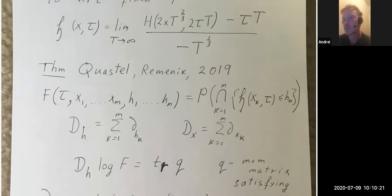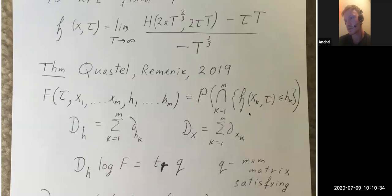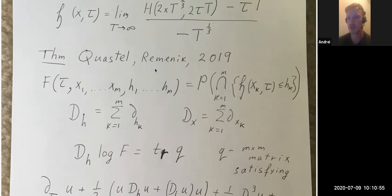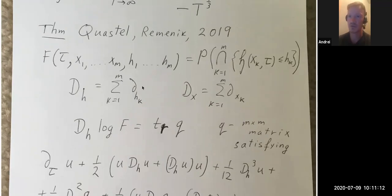In the work of Castel and Remenik, the one-time multi-point distribution was considered: the height function fixed at several positions but at one time, denoted by capital F. Castel and Remenik introduced differential operators which are sums of derivatives with respect to h_k and x_k.